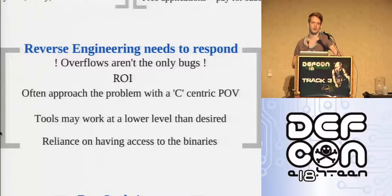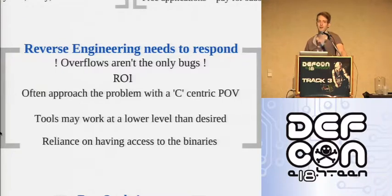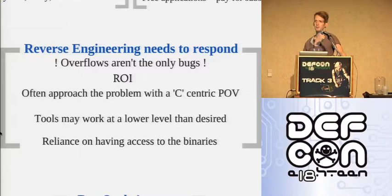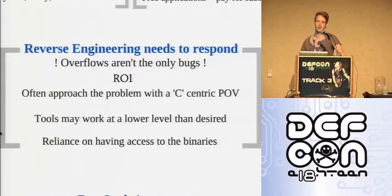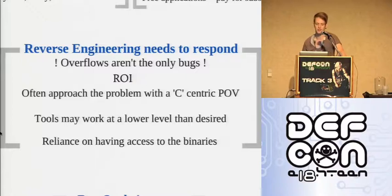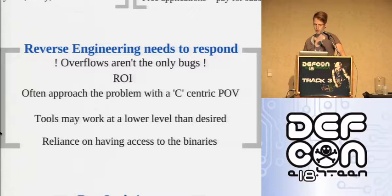There's definitely a need for that, but the return on investment for those kinds of bugs is a significant investment. At Immunity, where I work, we have the resources to invest six months in a bug, but then the price of that bug has to reflect the amount of work that goes in, and a lot of people aren't prepared to pay for that. Python will have lots of good bugs, and higher level languages can have lots of good bugs, and they're often much cheaper to find because not much effort has gone into techniques to find those bugs. So it's easy - there's a lot more low-hanging fruit.